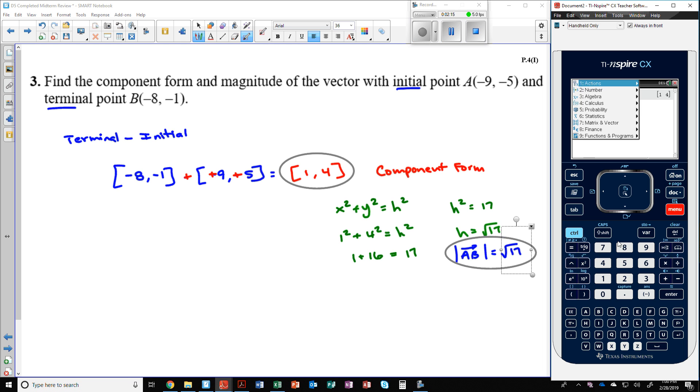And then if you convert it to polar, menu 7, C, 4, we convert it to polar. And that value right there is going to be the same thing as the square root of 17. So we can see those two match. So we did do it correctly. I'll see you next time.